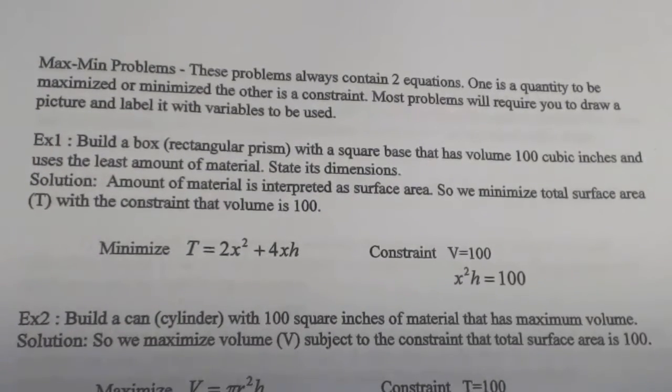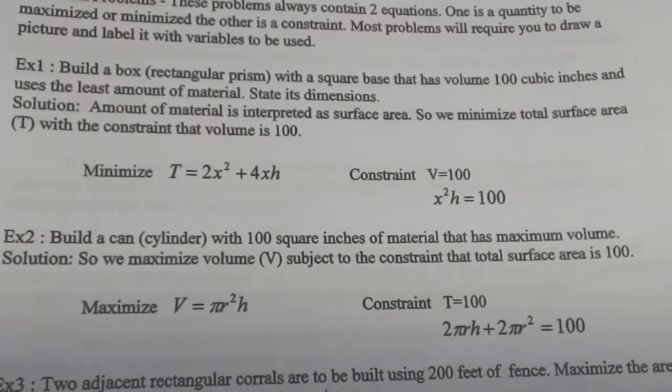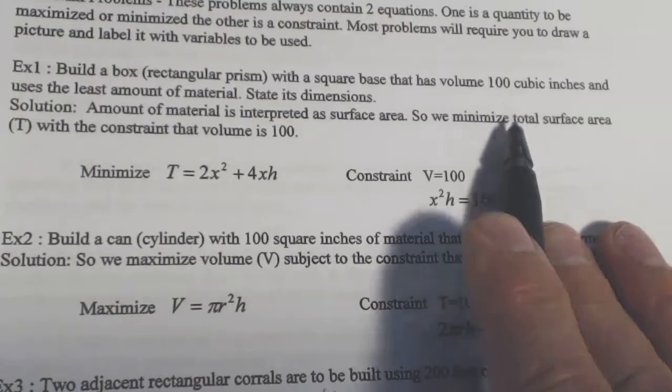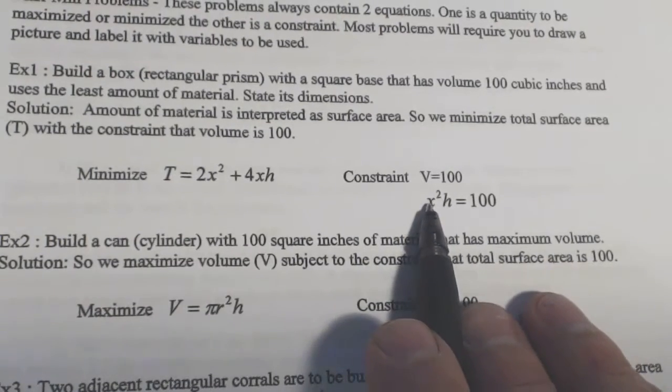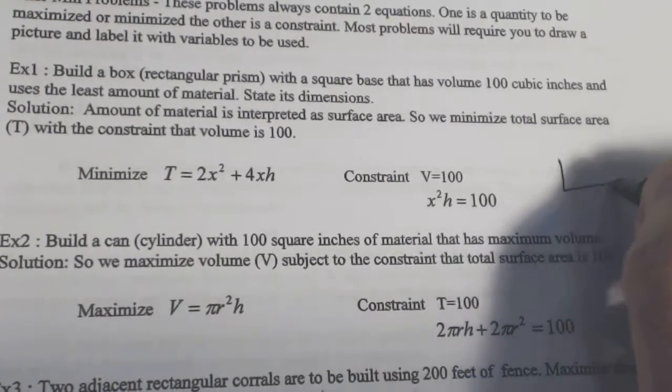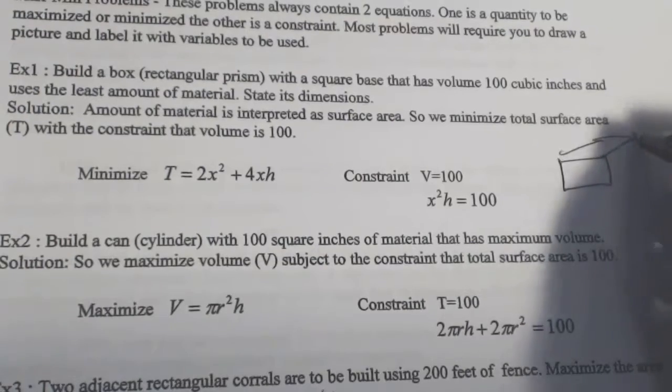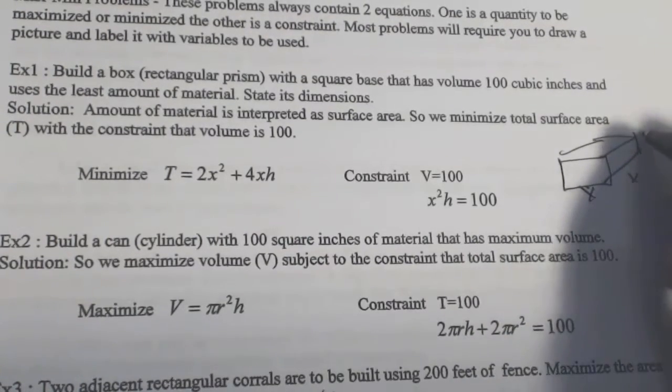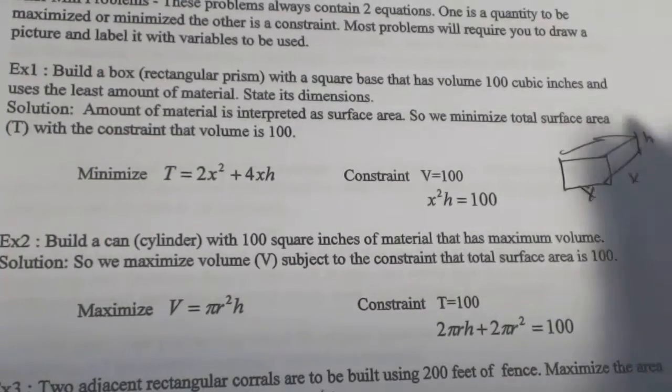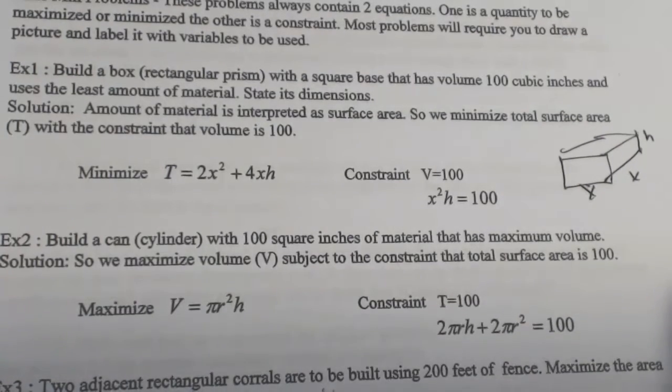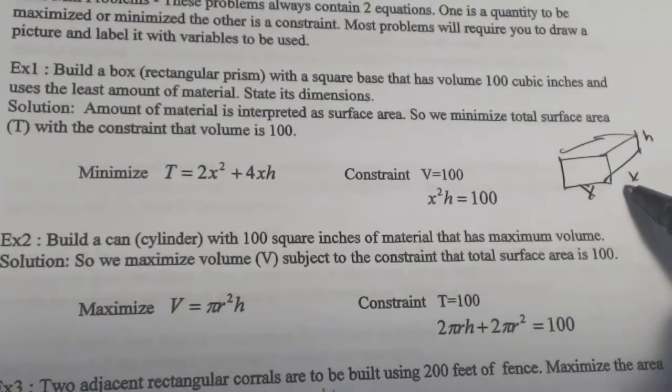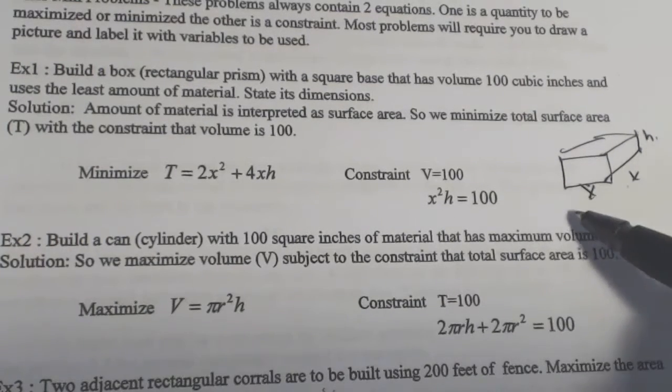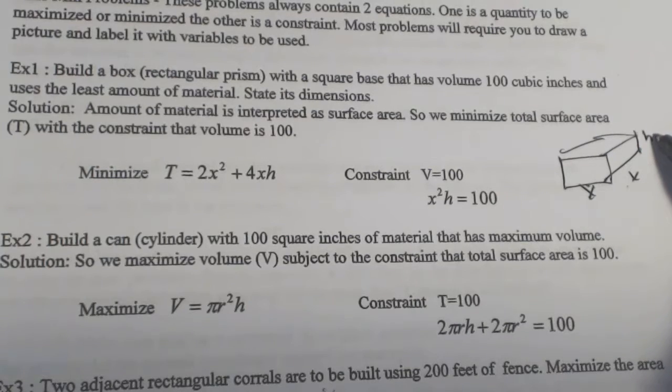Most problems will require you to draw a picture and label it with the variables to be used. So we're going to build a box on this first example here. This is just like the one you're doing. And it's got a volume of 100. So this is not your problem, but that would be for a basic box like this. And it has a square base, x by x. We don't know what its height is. And this guy's only got a top and a bottom, but its volume is length times width times height.